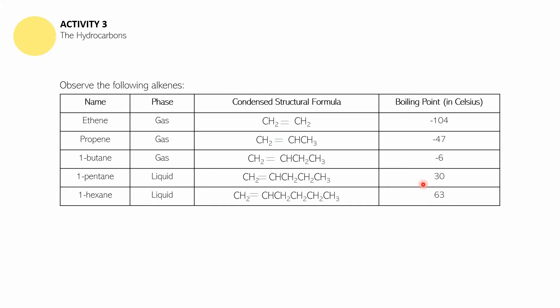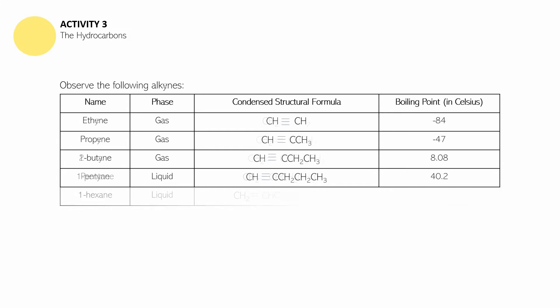Next is a table of alkynes: ethyne, propyne, 1-butyne, and then 1-pentyne. The boiling points are also noted here. You can pause this video if you need more time.